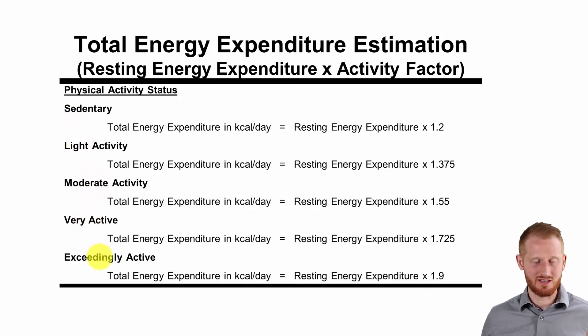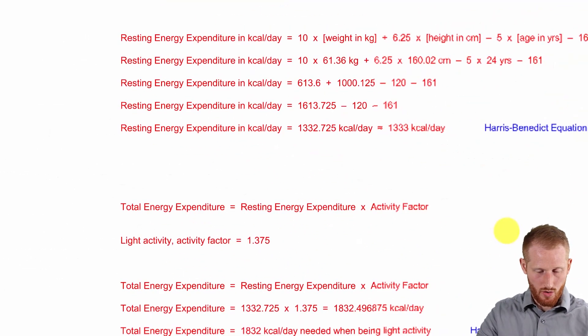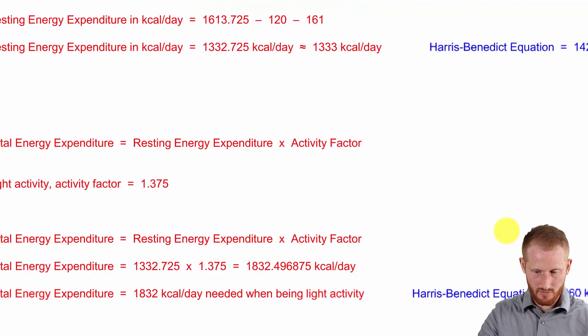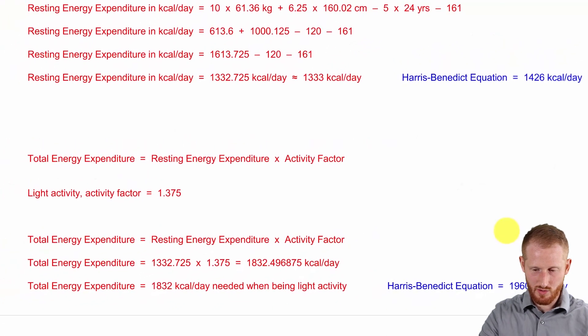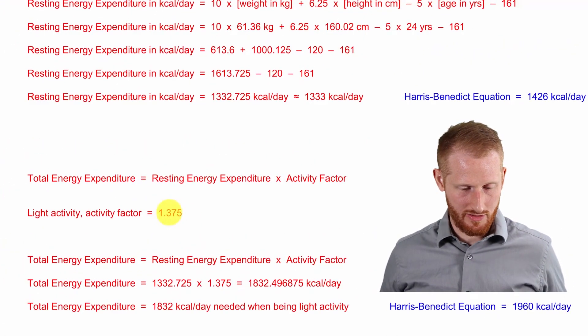And we have our activity factors here at the end. For light activity, 1.375 is the value, which is what we have over here on our equations right there.